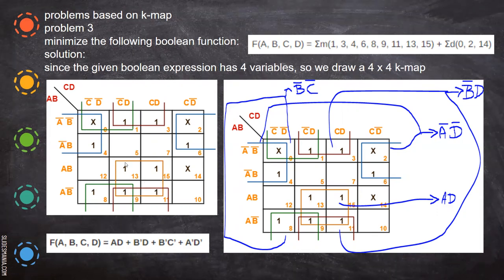When you see here, you can form a quad. And when you roll the map like this, this and this together form a quad. Here also you can make X in order to make a quad — you can include that. When you roll the map like this, you can make it as a quad. But this cannot be combined with anyone, so just leave it. No need to include that.